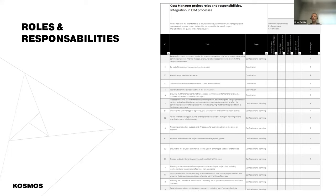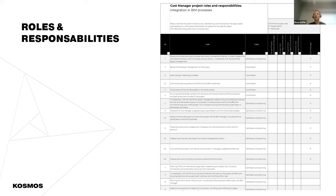Roles and responsibilities — we've tried to define ourselves internally what we believe the roles and responsibilities are for engineers, architects, QS, etc., when it comes to information management. What we often find is that a lot of roles and responsibilities documents miss out on the QS process of data management or information processing. So we like to add those additional elements to the roles and responsibility matrix. There might already be one on the project, but we add our specific elements in relation to the BIM execution plan.